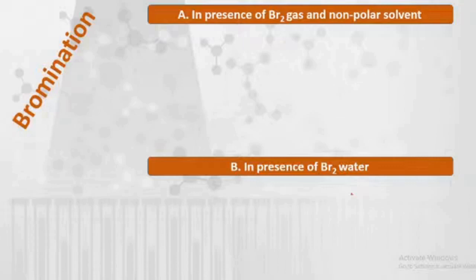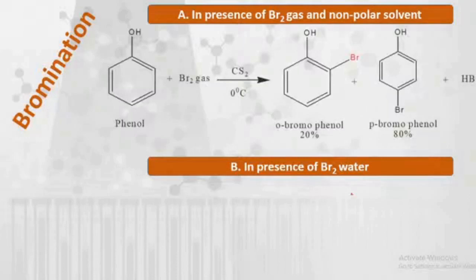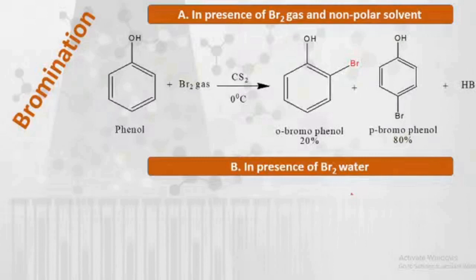In reaction A, phenol reacts with bromine gas in the presence of carbon disulfide — a nonpolar solvent — at zero degrees Celsius. This gives orthobromophenol and parabromophenol as a mixture of monobromophenols.